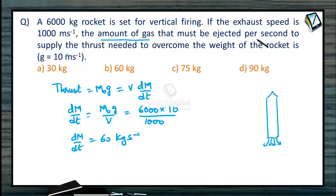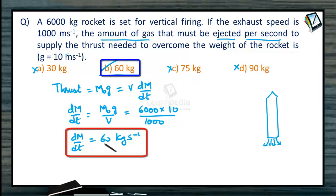The amount of mass that must be ejected per second: 30 kg is wrong, 60 kg per second is the correct option, 75 kg is wrong, 90 kg is wrong. So the correct answer is 60 kg of mass ejected per second.